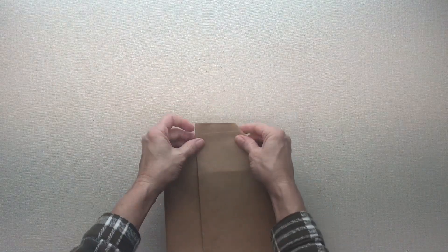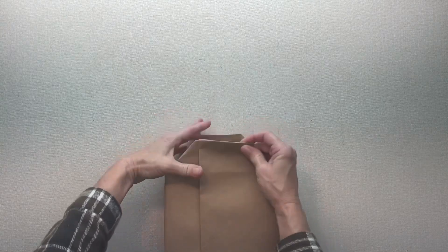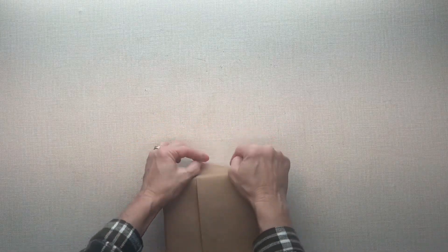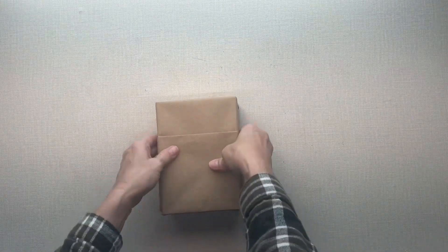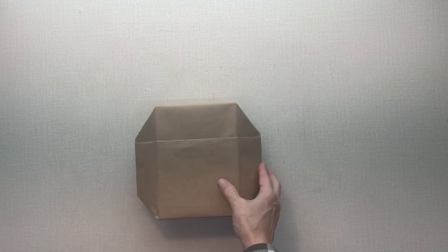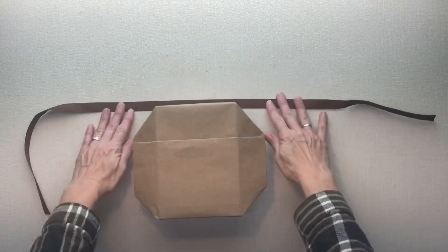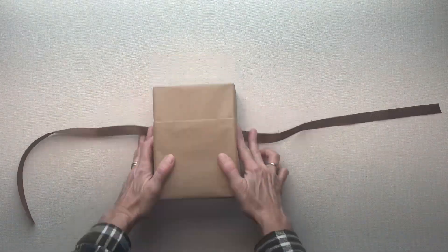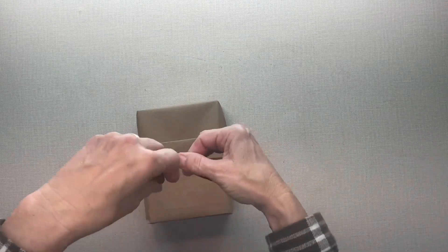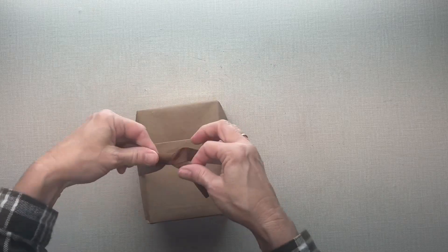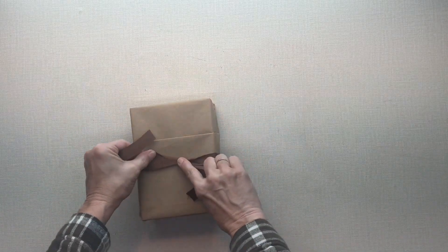This one's a lot like just regular wrapping except that I've made that pocket in the front. That just gives you something to stick a card in or something. And then just any ribbon will work. Tie it around in the front and that serves as your tape, holds it together.